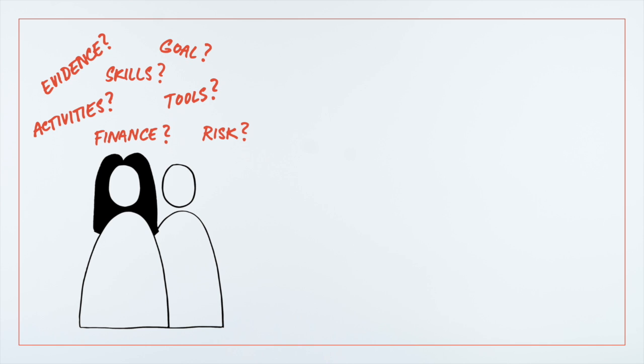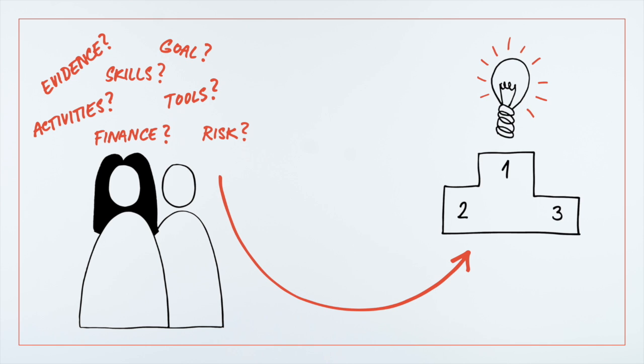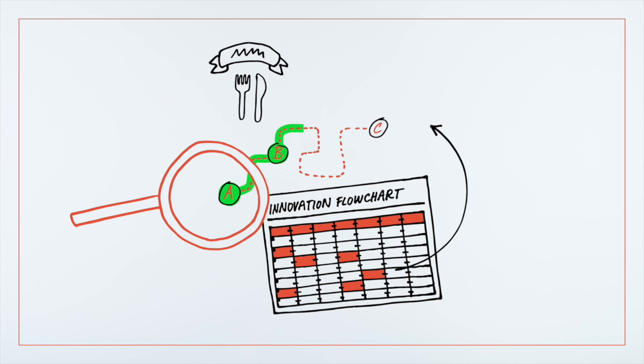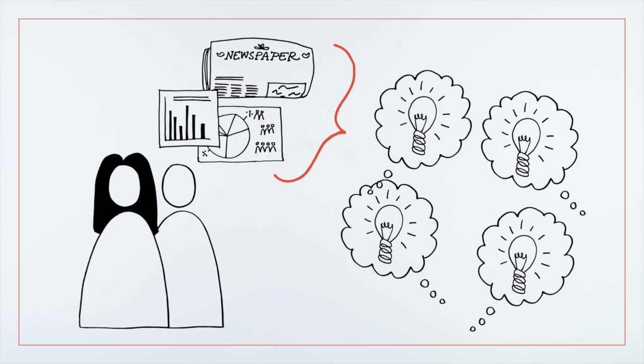They use the innovation flowchart to think through all the stages of their initiative. They begin by reviewing the things they've already done to identify where they are in the process. Jennifer and Matthew have completed their early research and need to begin making sense of it to generate viable ideas.